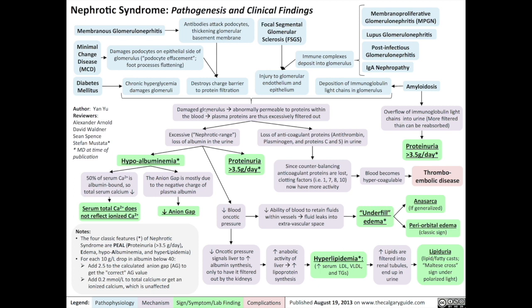Going back to the main mechanism: glomerular damage makes the glomerulus abnormally permeable to proteins within the blood. Plasma proteins are thus excessively filtered out from the blood into the urine. This results in two basic pathophysiological processes. First, excessive loss of albumin — the main plasma protein — into the urine, meaning greater than 3.5 grams per day of proteinuria.